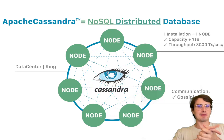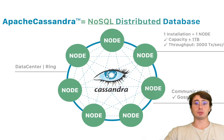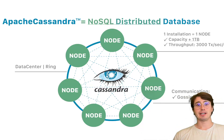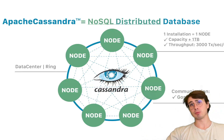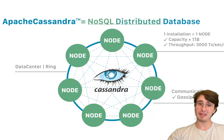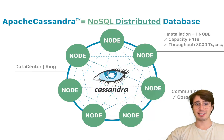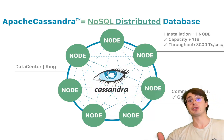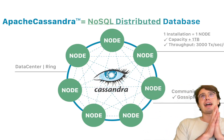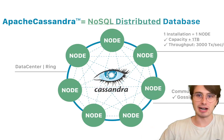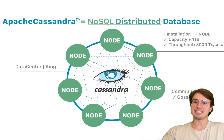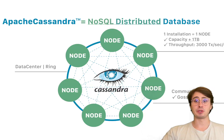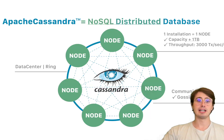Cassandra does have some cons. First, complexity in querying — Cassandra's query model is limited compared to document-based databases, and querying data requires careful schema design upfront distributed across all nodes. It also has a lot of overhead for small deployments: this is meant for terabyte-scale applications, and for small-scale applications Cassandra's distributed nature introduces unnecessary complexity. You don't need a Ferrari to drive to the store. Finally, there's a steep learning curve — Cassandra's unique data model and architecture require significant experience or willingness to learn, especially for those new to wide-column stores or distributed systems.